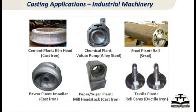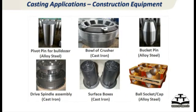Industrial machinery of all other types — from cement plants, thermal plants, and chemical plants to steel plants — all require parts, and many of those parts are made by the metal casting process.